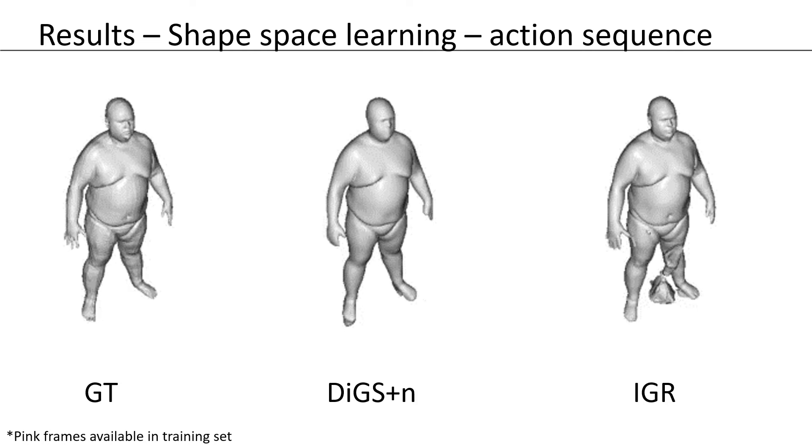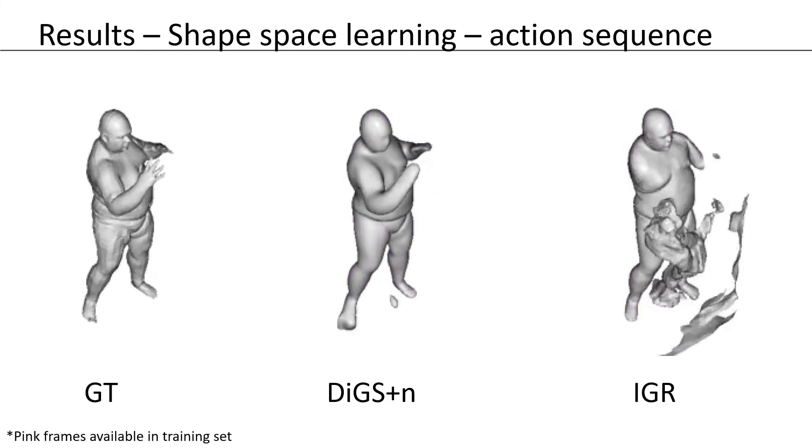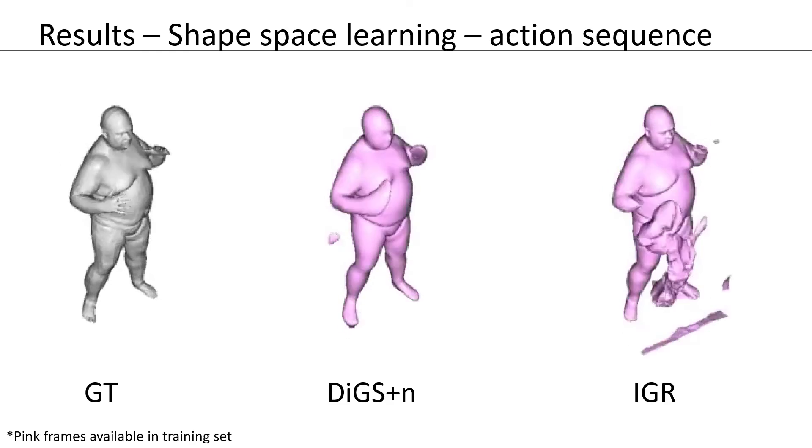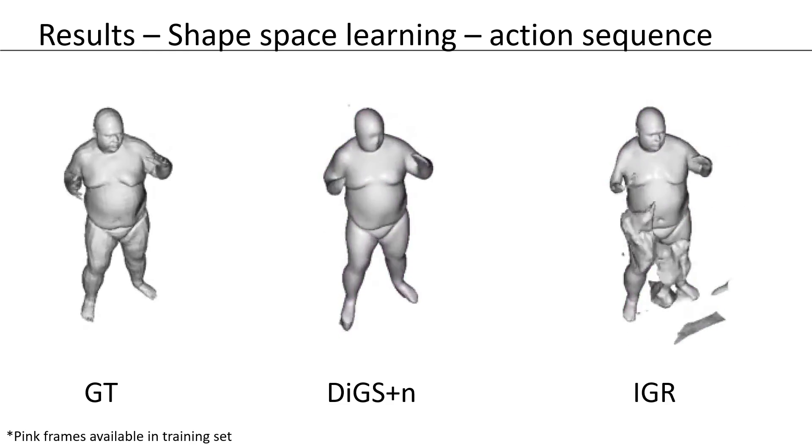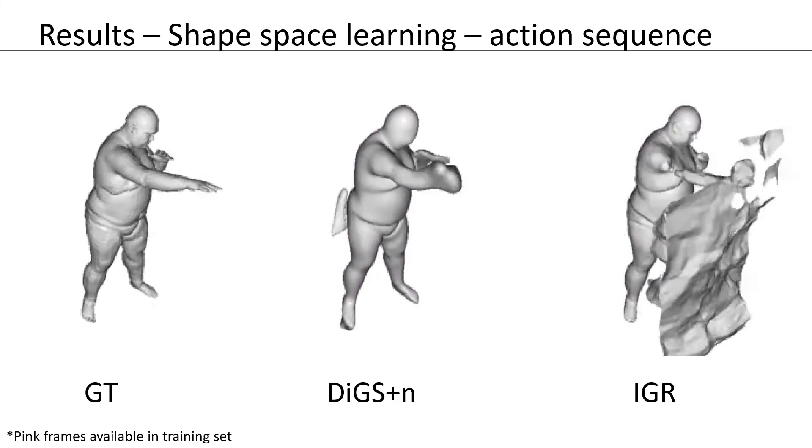This is even more evident when looking at a full action sequence. Here, only pink frames are in the training set. IGR shows more detail, but also many ghost geometries and disappearing hands. DIGS is over-smooth, but with much less ghost geometries and structural errors.